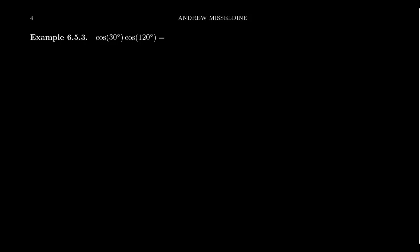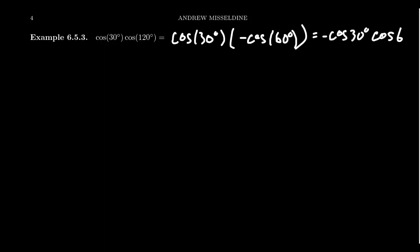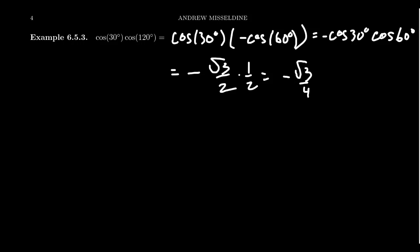Let's compare these identities in some calculations. Consider cosine of 30 degrees times cosine of 120 degrees. Now 120 degrees terminates in the second quadrant and references 60 degrees, so cosine of 120 is negative cosine of 60 degrees. We can write this as negative cosine(30°) times cosine(60°). Since 30 and 60 are complementary, cosine(30°) = √3/2 and cosine(60°) = 1/2, giving us negative √3/2 times 1/2, which equals negative √3/4.